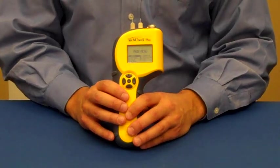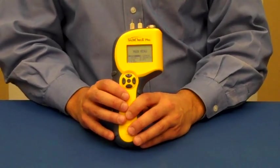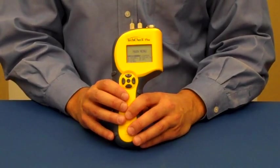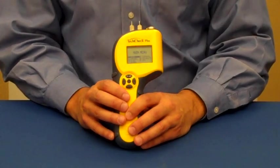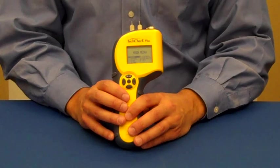The drywall scale is a Delmhorst exclusive, and it's found on some of our other products as well. It's a great feature because it gives you the actual moisture content of the drywall that you're testing.